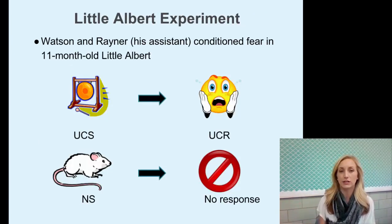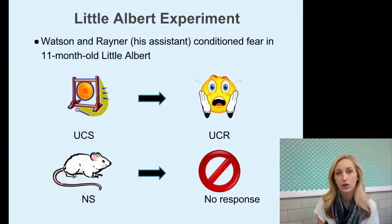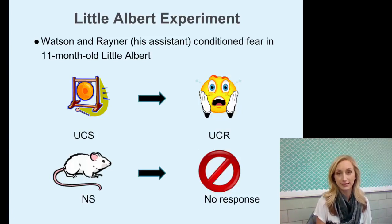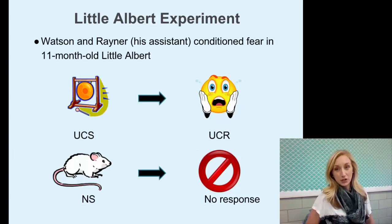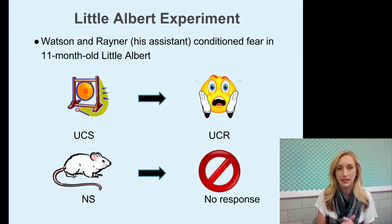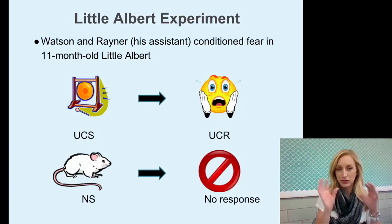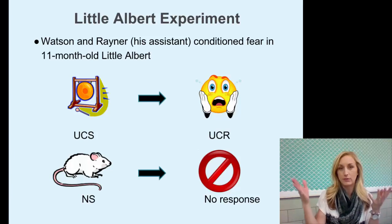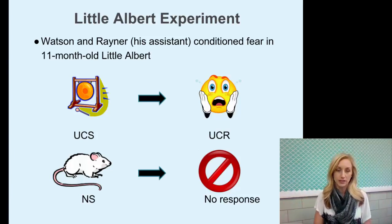J.B. Watson did an experiment with his assistant Rayner called the Little Albert Experiment. He took children — infants, babies — and he conditioned them. He wanted to condition fear into these children. He took an 11-month-old baby named Little Albert. I'll explain why we call it the Little Albert Experiment and focus on this one child among the many he actually experimented on.